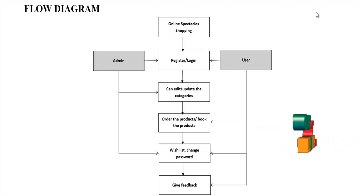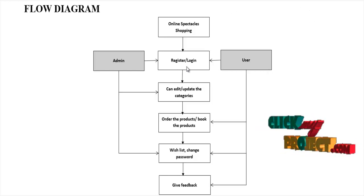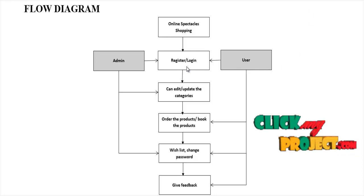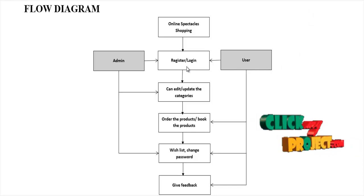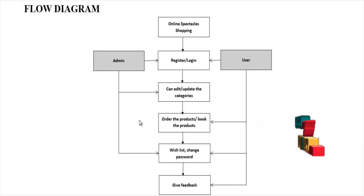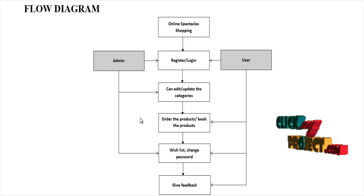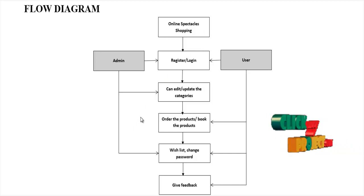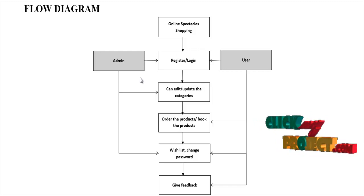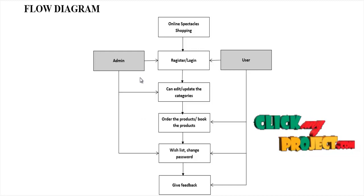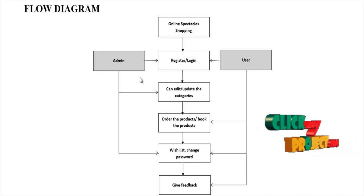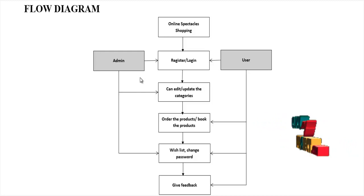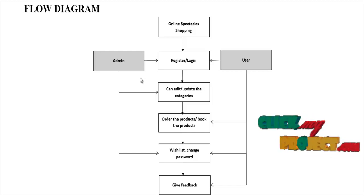The user can log in or register. If the user is new, they must register on the registration page. If the user is existing, they can directly move to the login page. The user can then view the products based on categories such as kids, men's, and women's, and then order the products.